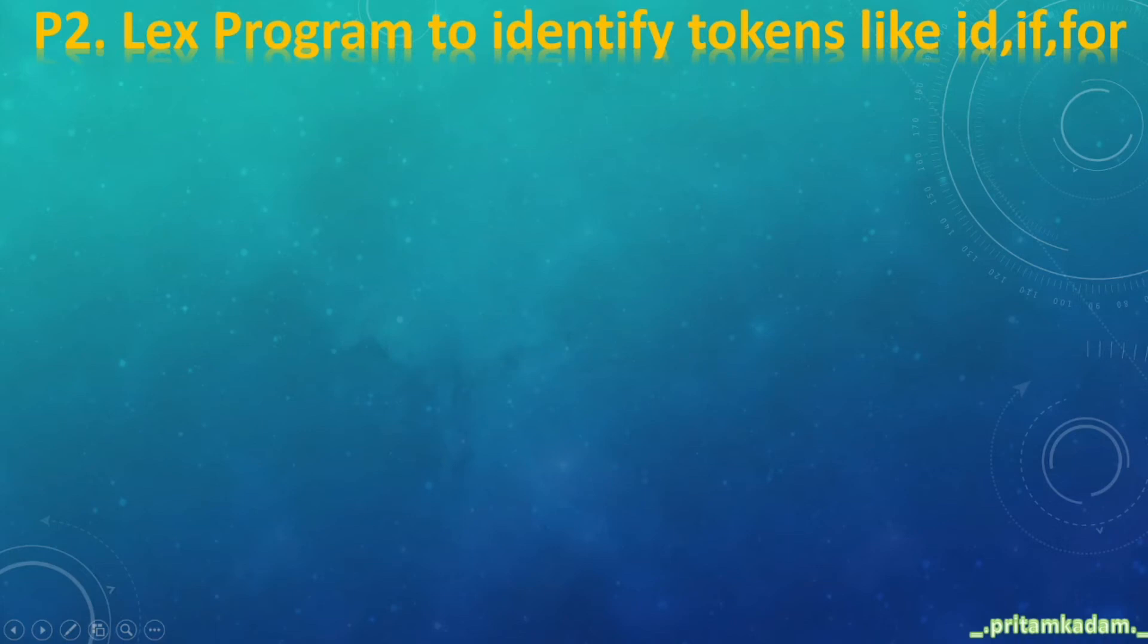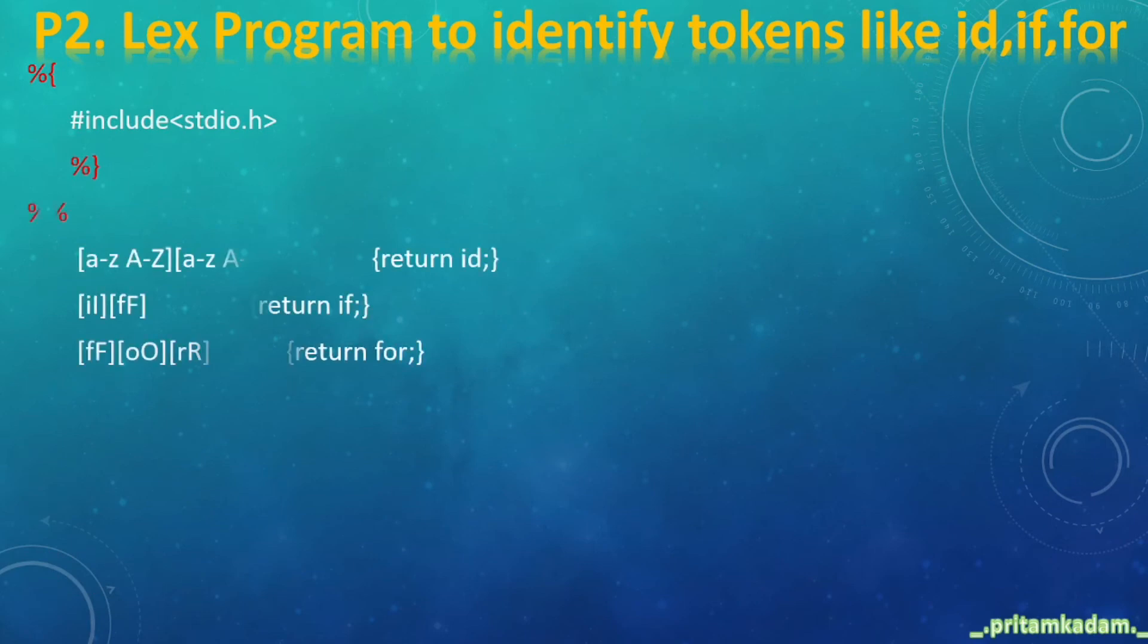Now let's see another program: lex program to identify tokens like id, if, and for. First, in the first section we write #include stdio.h. Then in the other section, id means identifier, so first element should be a character and then any characters or digit can be included. Then if: small i and capital I, small f and capital F. And for: for also small f, capital f, small o, capital o, small r, capital r. In all those sections, in the first one return id, in the second one return if, and then third one return for. Now we have to write the third section, that is of main: printf enter word and yylex to start the scanning.